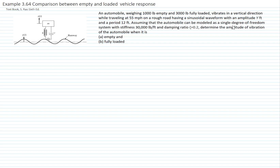This is example 364 and we will compare the response for an empty or a loaded vehicle. An automobile weighing 1,000 pounds empty and 3,000 pounds fully loaded vibrates in a vertical direction while traveling at 55 miles per hour on a rough road. The road has a sinusoidal profile with an amplitude y₀ feet and a period of 12 feet. The automobile is modeled as a single degree of freedom system with stiffness 30,000 pounds per foot and a damping ratio of 0.2. We would like to determine the amplitude of the vehicle when empty and when loaded.